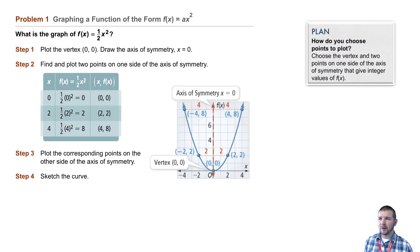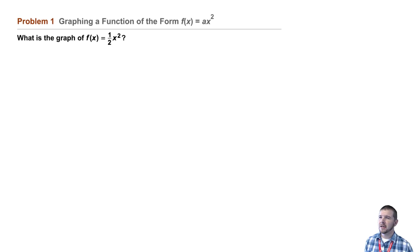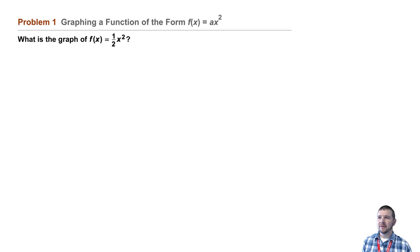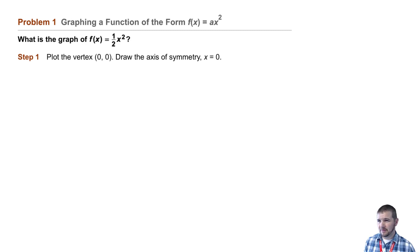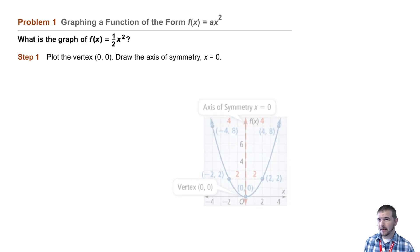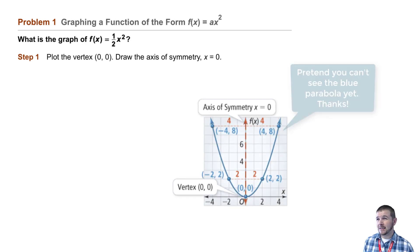Problem 1: graphing a function of the form f of x equals ax squared. The question asks: what is the graph of f of x equals 1 half x squared? Step 1: plot the vertex. The vertex is the origin, the point 0 comma 0, and draw the axis of symmetry — that's the line x equals 0, or the y-axis.